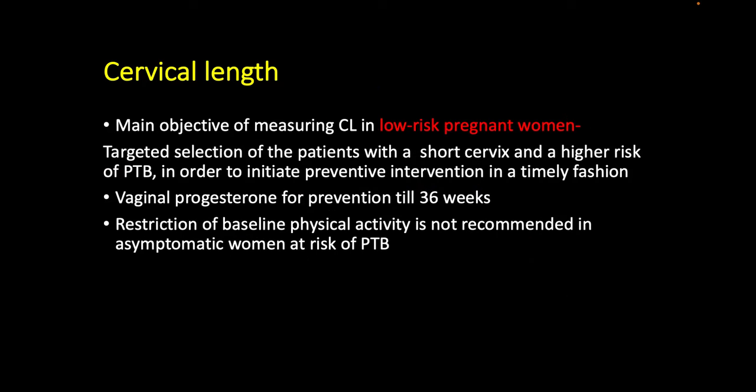The main objective when screening a low-risk primipara for cervical length is to select patients with a short cervix and high risk of preterm birth so that preventive measures can be initiated in a timely manner. As soon as a cervical length of 25 millimeters or less is detected, vaginal progesterone is started and continued until 36 weeks of gestation. Bed rest and restriction of baseline physical activity are not recommended in asymptomatic women who incidentally have a short cervix at the mid-trimester scan, as studies have shown bed rest increases thromboembolic events.